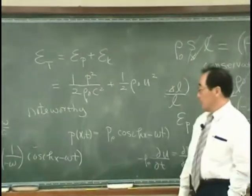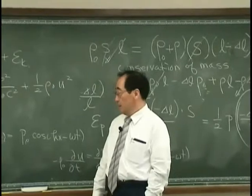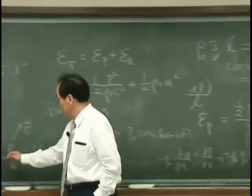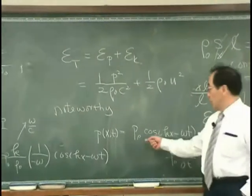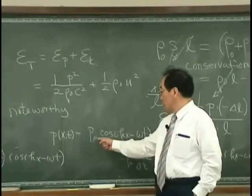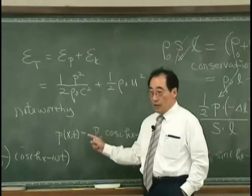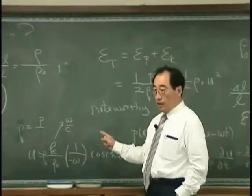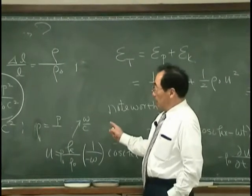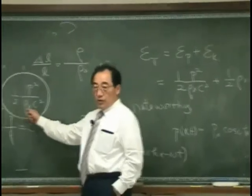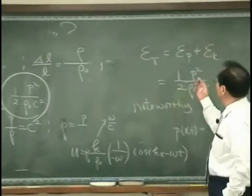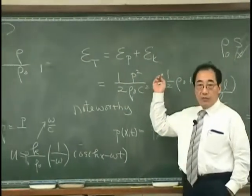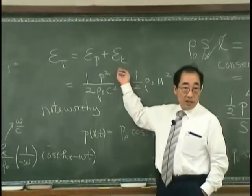Oh, sorry, there is a P. If I square this, I will have P0 square cosine square. Then divide by rho 0, and C square, then I will have the same form as the kinetic energy.